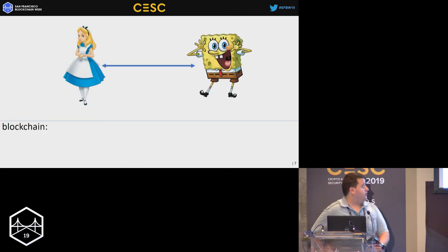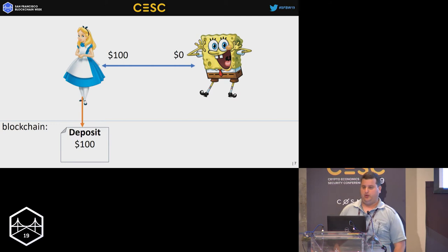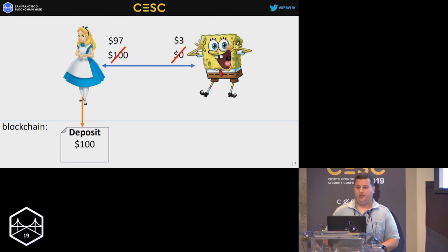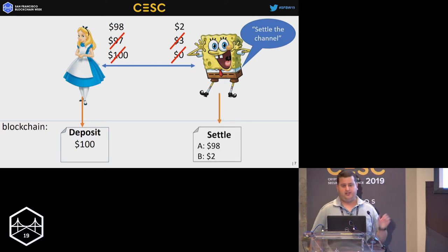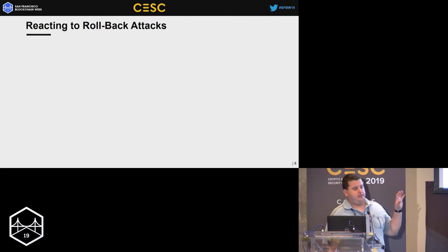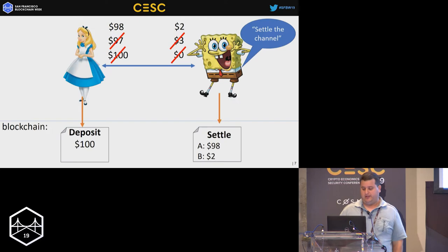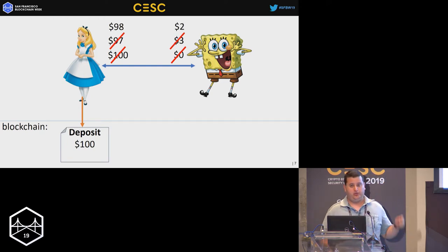Looking at an example: Alice places a deposit on-chain to fund the channel — $100 for Alice, zero for Bob. They start paying each other: Alice pays Bob $3, new balance is $97 to $3. Bob pays her back $1. Later, Bob settles the channel on-chain: he gets $2, Alice gets $98. What we need to ensure is prevention of rollback attacks — we must prevent Bob from settling at an older state like $97/$3, which is better for him, rather than the newest state.